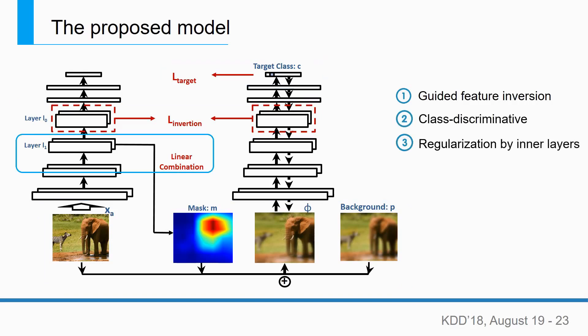In addition, we use the activation values at higher convolutional layers as a regularizer to make the final saliency maps more smooth and continuous.